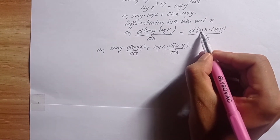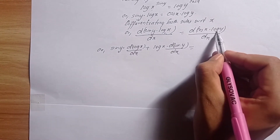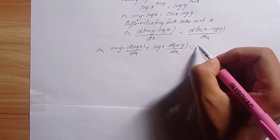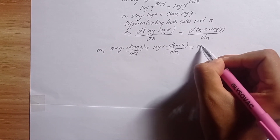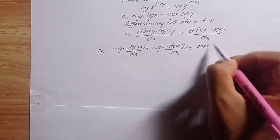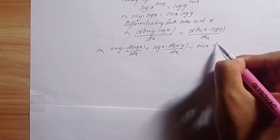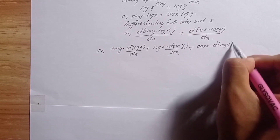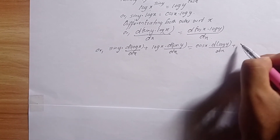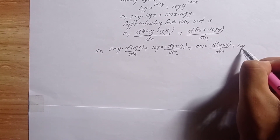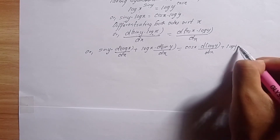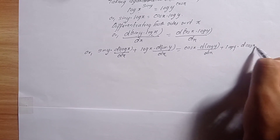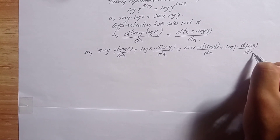On the right-hand side, u is cos x and v is log y. So it is: cos x times the derivative of log y with respect to x, plus log y times the derivative of cos x with respect to x.